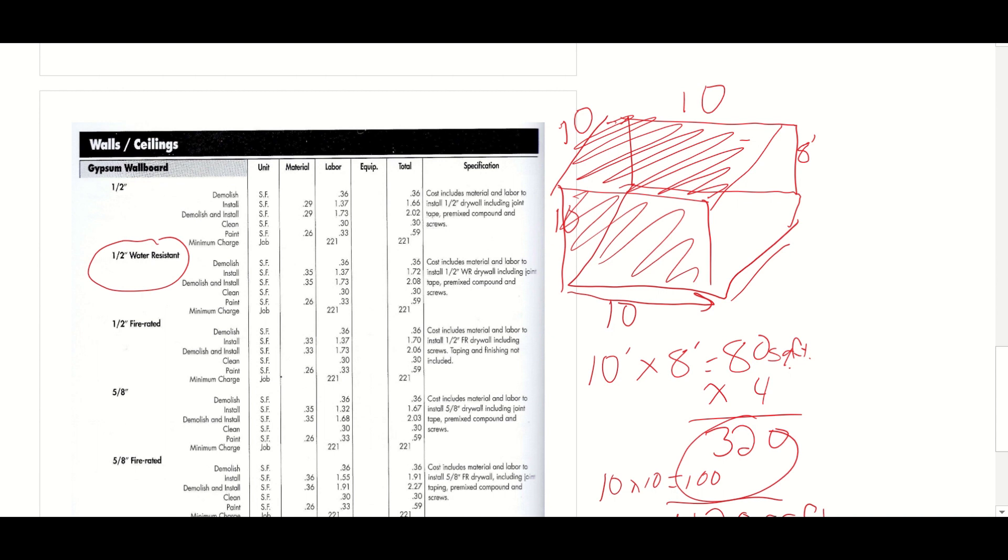So now we go over here, just like everything else, we have to choose our product. Standard residential application will be a half inch gypsum wallboard. If I'm using a bathroom or a kitchen, I'm going to use a water resistant wallboard. It's got some antimicrobial properties and it's a better construction for water resistant.